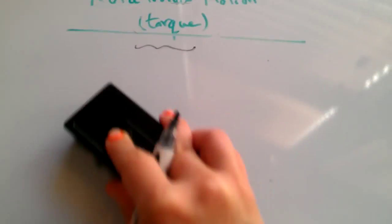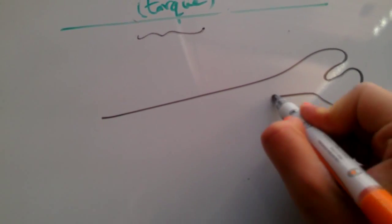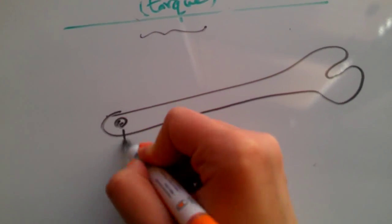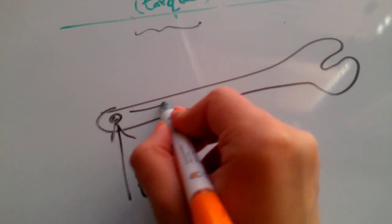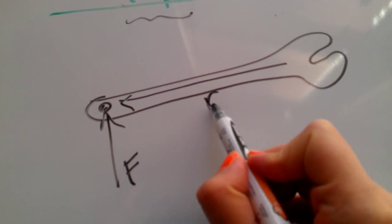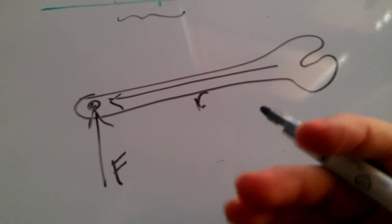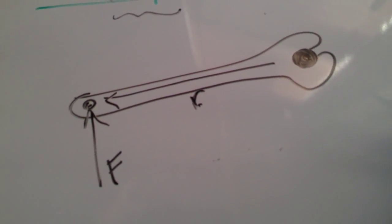Same way for wrenches. The reason we use a wrench is essentially having a long lever arm so that when we exert some force at this point, we have a long lever arm and that compensates for the amount of torque that we need in order to screw or unscrew something.